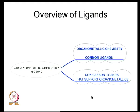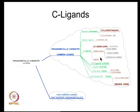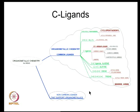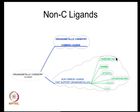The most common ligands, of course, are ones which have the carbon-metal bond — that can be carbon monoxide, which we have already discussed. We can also talk about carbene ligands and carbyne ligands, which all have a single carbon attached to the metal centre. On the other hand, there are several ancillary ligands which also support organometallic chemistry. Today, we are going to talk about one such ligand: the phosphorous(III) chemistry.